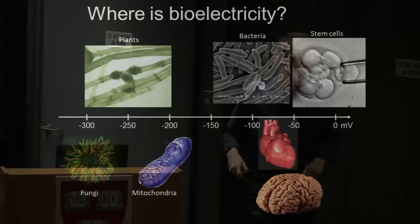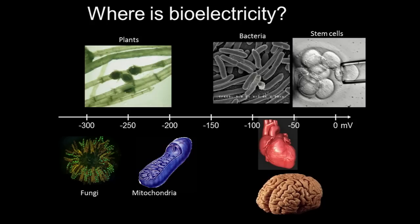Where do we find bioelectric effects in the world? The first quantitative measurements were in the late 1870s, when people discovered that Venus flytraps generate a little electrical impulse when they close. Plants have voltages of about a quarter of a volt. Fungi have unusually large voltages across their membranes. Mitochondria, which produce ATP inside our cells, generate about minus 180 millivolts. Bacteria use a voltage across their membranes to power ATP generation. Our heart is regulated by an electrical pacemaker, our brain is electrically active, and in fact every cell in our body has some sort of voltage across it.